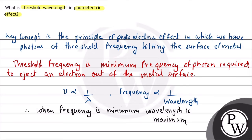So basically, we have seen the threshold frequency is the minimum frequency required to eject the electron.